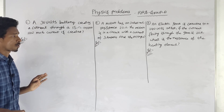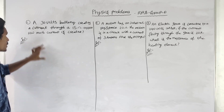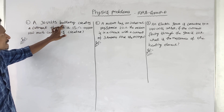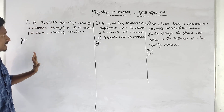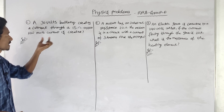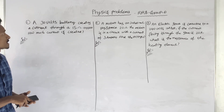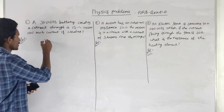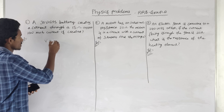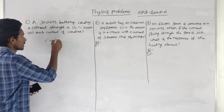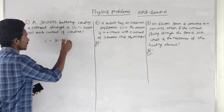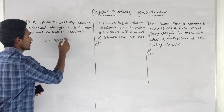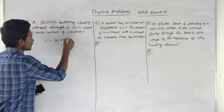First of all, we have a problem. A 30V battery creates a current. We have 30V.